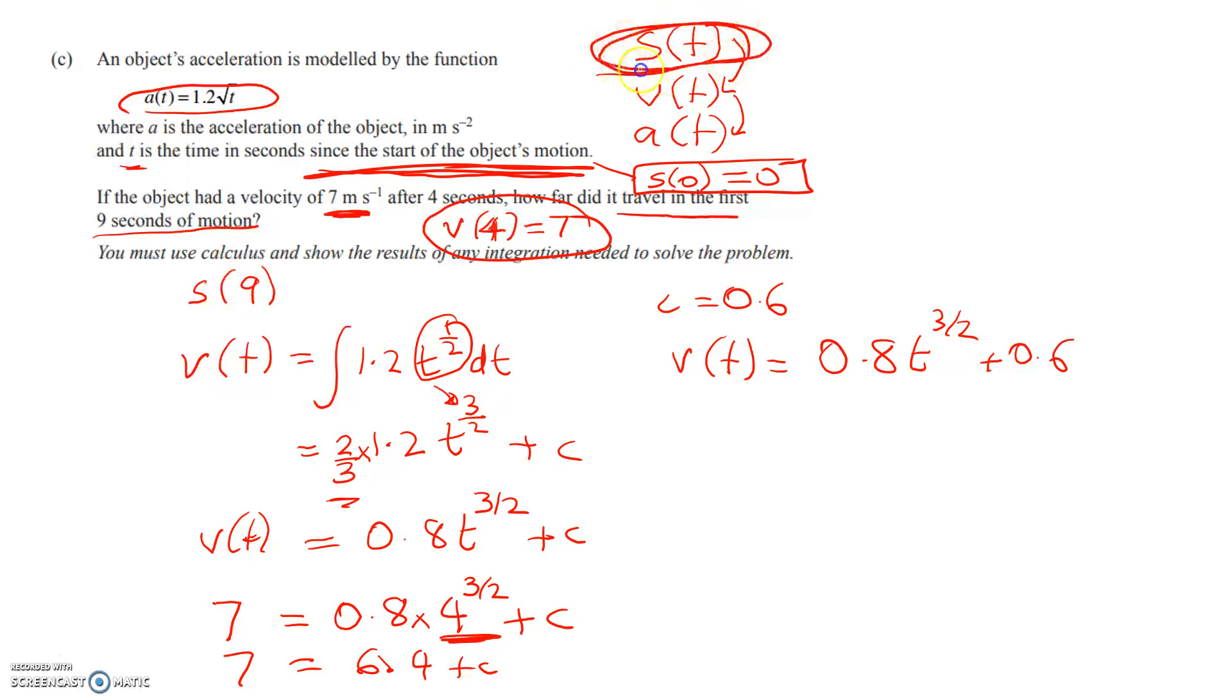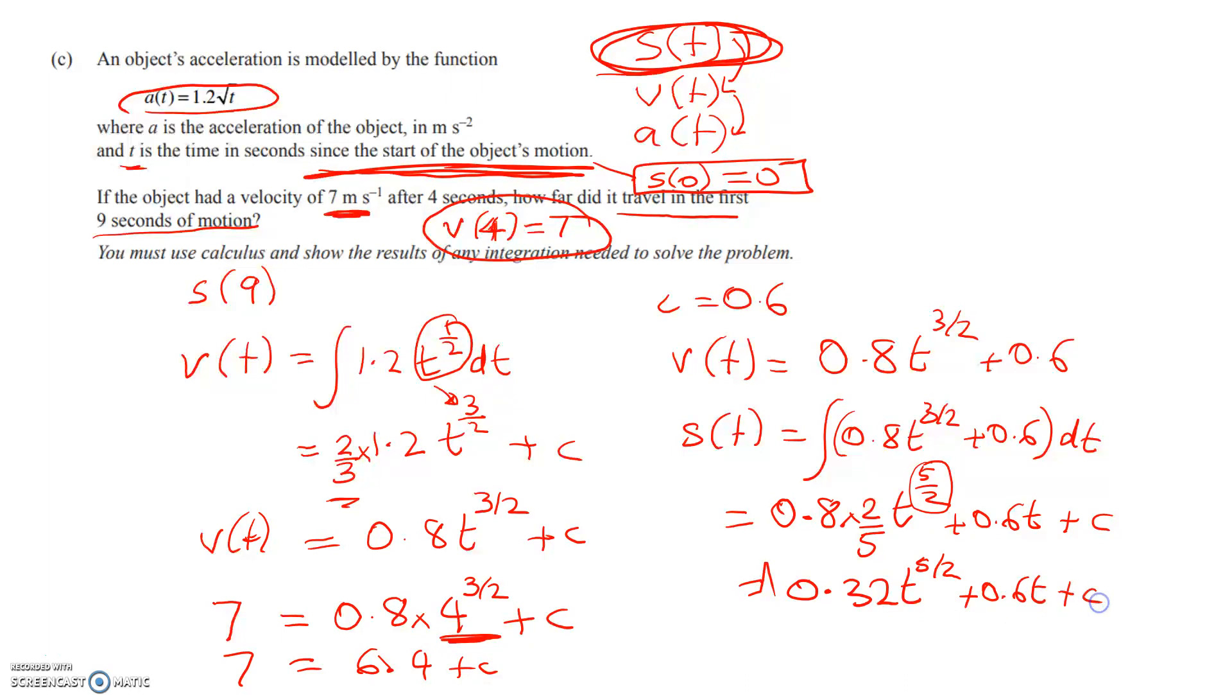And now we're ready to go back up and get displacement. So s of t is going to be the integral of this. So it's the same thing, working backwards. It's going to give me 0.8 t to the 5 over 2. And I need to times by 2 fifths to undo the impact of this. Plus 0.6 t plus c. So that gives me 0.32 t to the 5 over 2 plus 0.6 t plus c. So that's s of t.